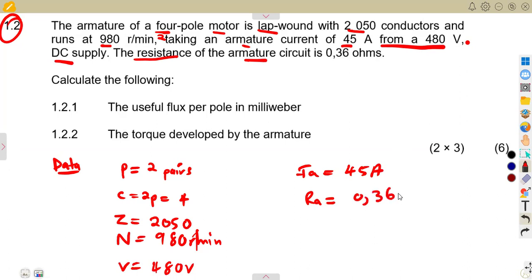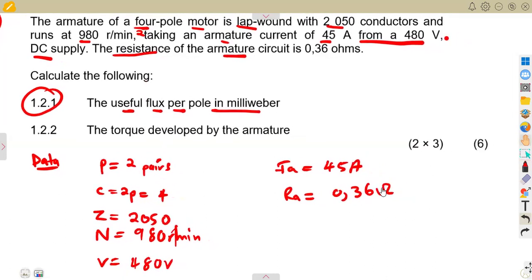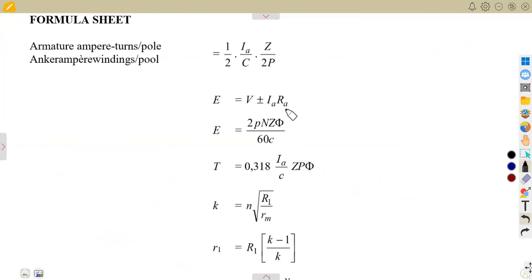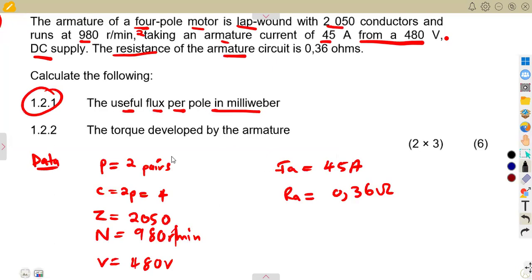Calculate the following: 1.2.1 - the useful flux per pole in milliwebers. The useful flux per pole we know has to be calculated if we are given either one of these, where we have the useful flux per pole based on the generated EMF and also on the torque. But we do not have the torque, there's nothing that we can use to calculate the torque. What about the generated EMF? Can we calculate the generated EMF? Yes we can.